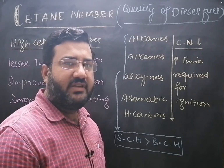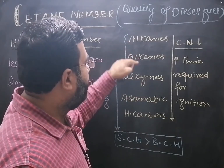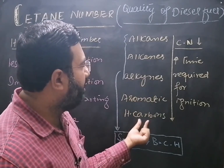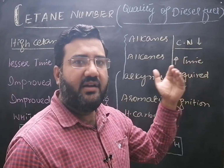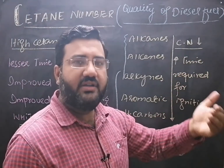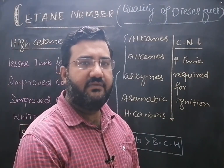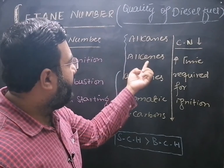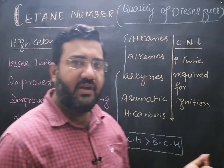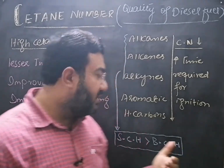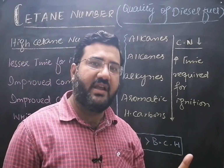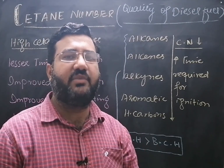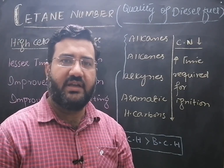Let us compare different hydrocarbons with respect to their ignition ability: alkanes, alkenes, alkynes, and aromatic hydrocarbons. As you move from alkanes to alkenes, then to alkynes, and then to aromatic hydrocarbons, their cetane number decreases, meaning the time required for ignition will be greater, or there will be greater delay in ignition. For alkanes, alkenes, and alkynes, keep in mind that straight-chain hydrocarbons have a higher cetane number compared to branched-chain hydrocarbons, because straight-chain hydrocarbons are more easily ignitable. Greater the percentage of straight-chain hydrocarbon in the diesel fuel, lesser will be the time required for its ignition.